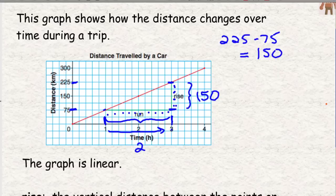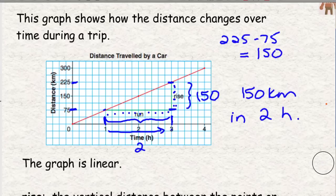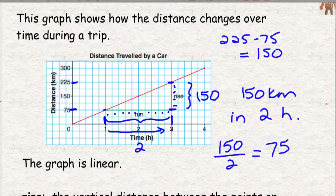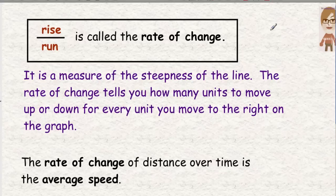So our rise over run here is 150 over 2. And what that actually tells us is that this person goes 150 kilometers in 2 hours. Remember back to unit rates? I didn't want to know how far they went in 2 hours. I want to know how far they go in 1 hour. So do you remember with unit rates that we just had to divide? And 150 divided by 2 is 75. So what that actually tells us is more than just how far they went or how long it took them, it tells us the rate at which they were traveling or the speed. So 75 is 75 kilometers per hour. That is their speed. That is their rate. The rise over run is called the rate of change or the unit rate.